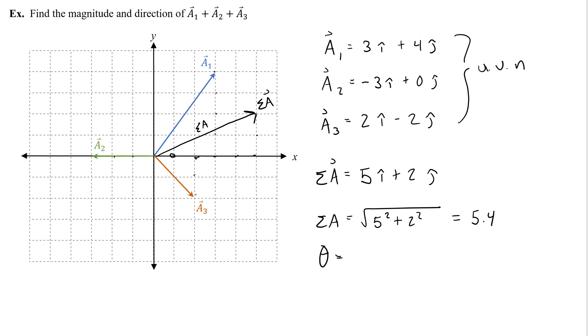And then the angle tangent inverse of the y over the x, so 2 over 5. Tangent inverse of 2 over 5 gives me 21.8, and I check to make sure that it's in the first or the fourth quadrant, which it is in the first quadrant. So that is the correct angle.